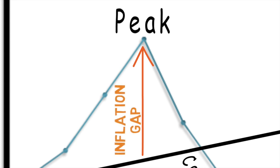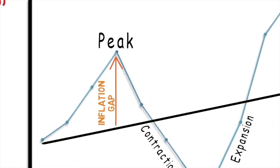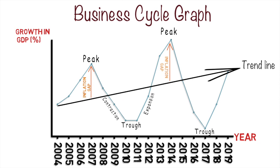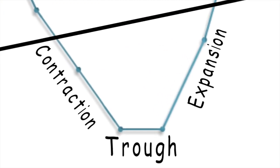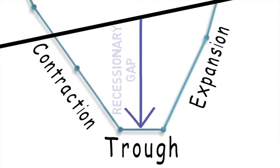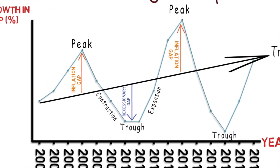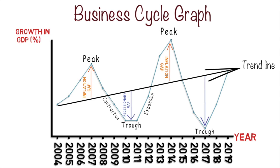The trend line allows us to identify periods of high growth and low growth. When output growth is above the trend line, we call this an inflationary gap — when the economy tends to overheat, inflate, and prices increase due to extra spending. There are two periods of an inflationary gap indicated on our business cycle. At the opposite extreme, when output growth falls below the trend line, we have a recessionary gap, where spending decreases, economic activity falls, prices start to fall, and we may drop into a recession.